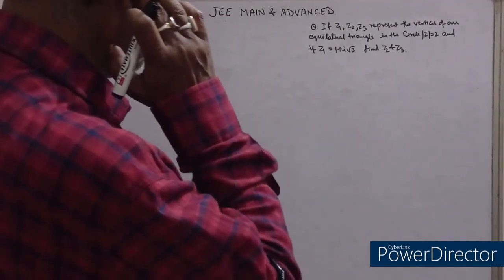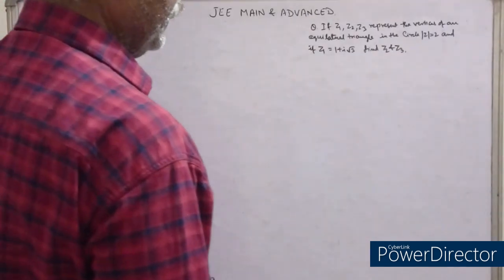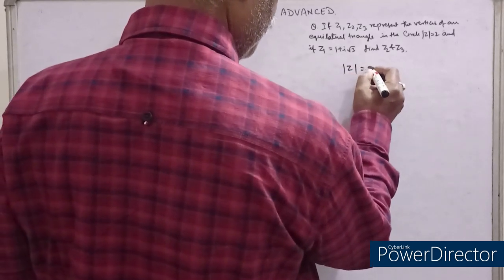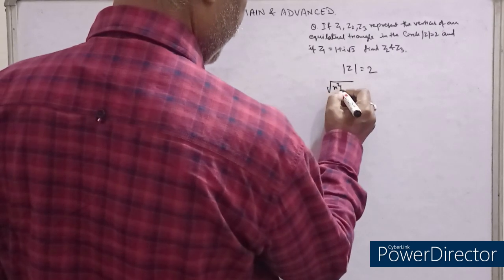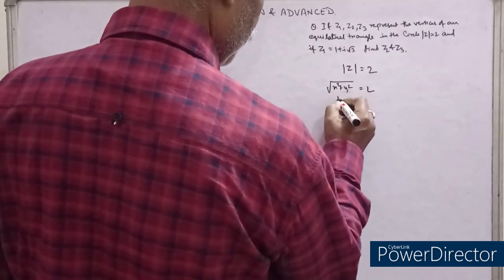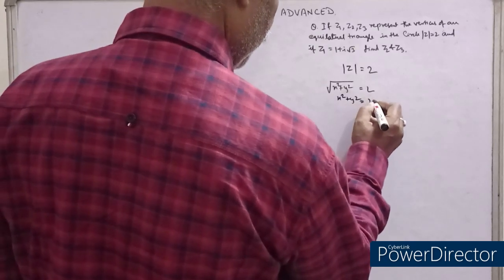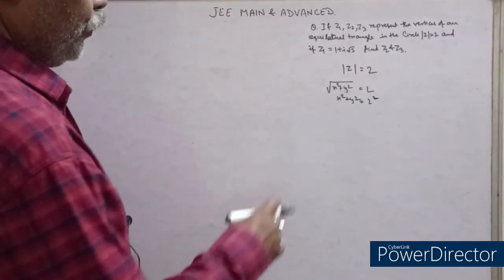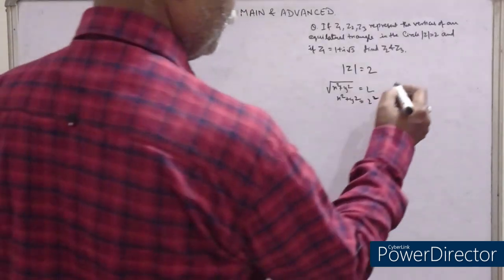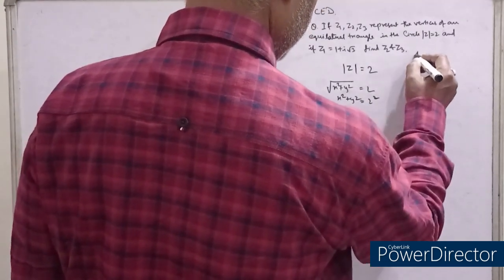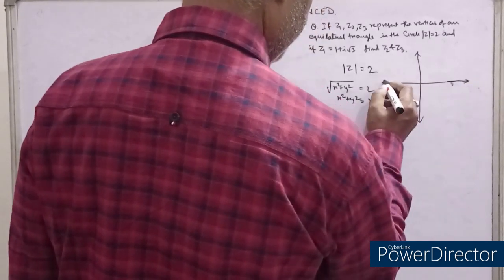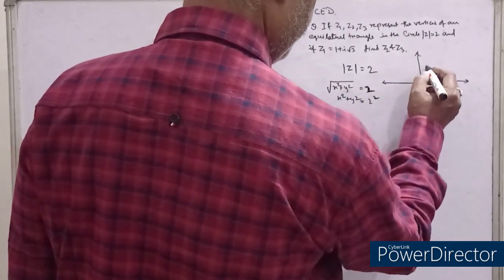Now see the next question on complex numbers. If Z₁, Z₂, Z₃ represent the vertices of an equilateral triangle inscribed in the circle |Z| = 2, that means √(x² + y²) = 2, so x² + y² = 4. This is the equation of a circle whose center is (0, 0) and radius is 2.